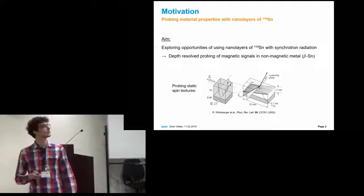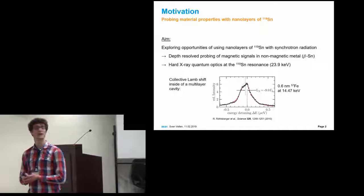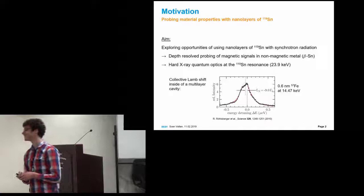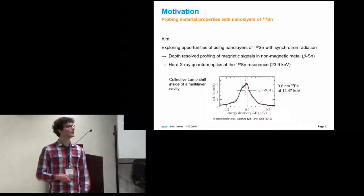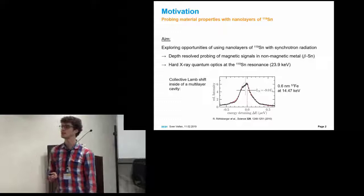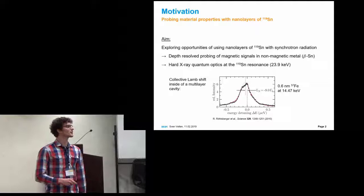Another example for thin-film experiments is to use them for quantum optics in the hard X-ray regime. There was a lot of work done for iron 57. For example, here they put a very thin iron 57 layer inside of a multi-layer cavity, and because in such a cavity the electric field is highly amplified, highly enhanced, the energy level shifts, which is called a collective Lamb shift here.